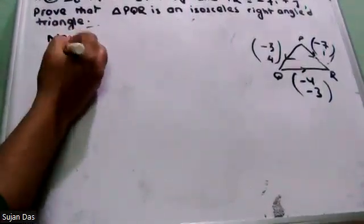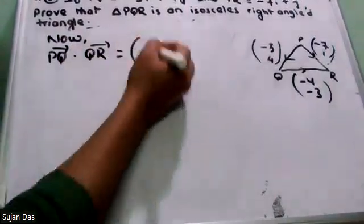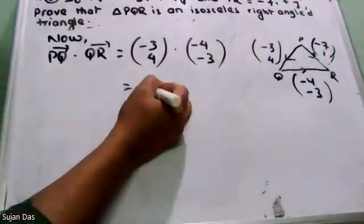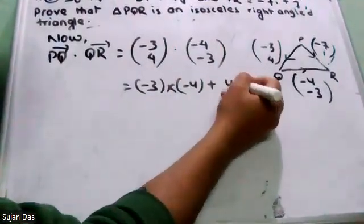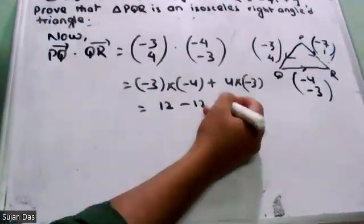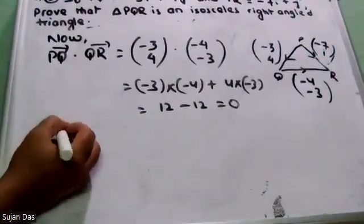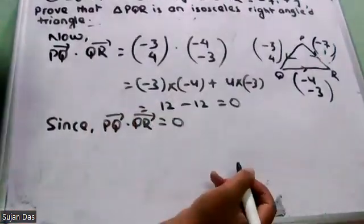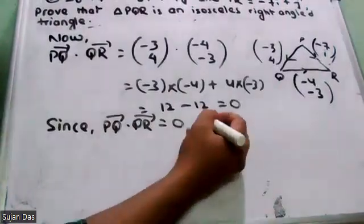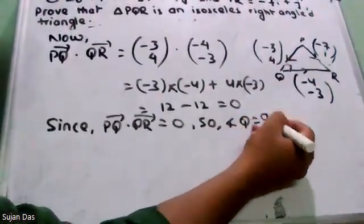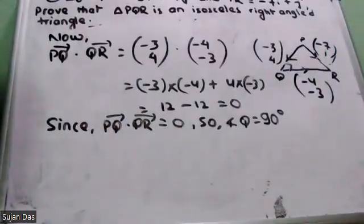Now, PQ vector dot QR vector: PQ is minus 3, 4 and QR is minus 4, minus 3. Matthiko into matthiko plus coloco into coloco: minus 3 into minus 4 plus 4 into minus 3 = 12 minus 12 = 0. Since PQ vector dot QR vector equals 0, PQ is perpendicular to QR — angle Q is 90 degrees.